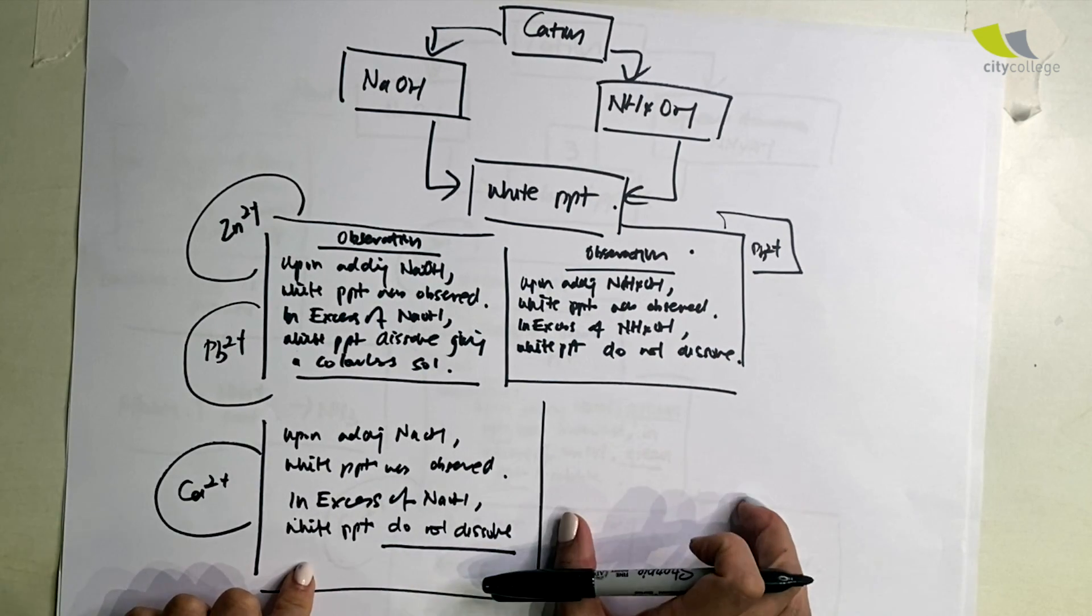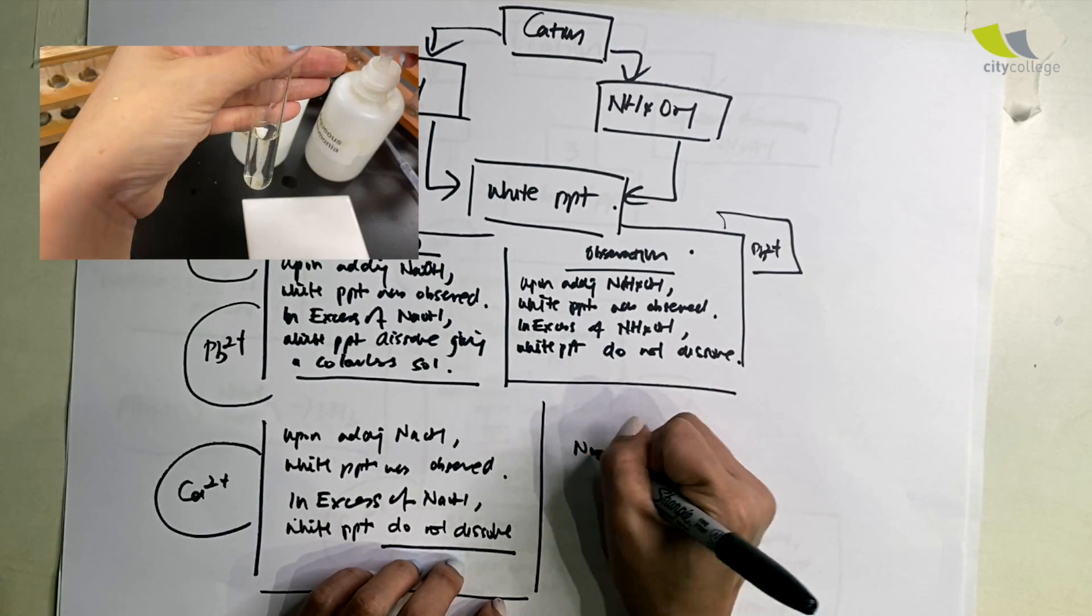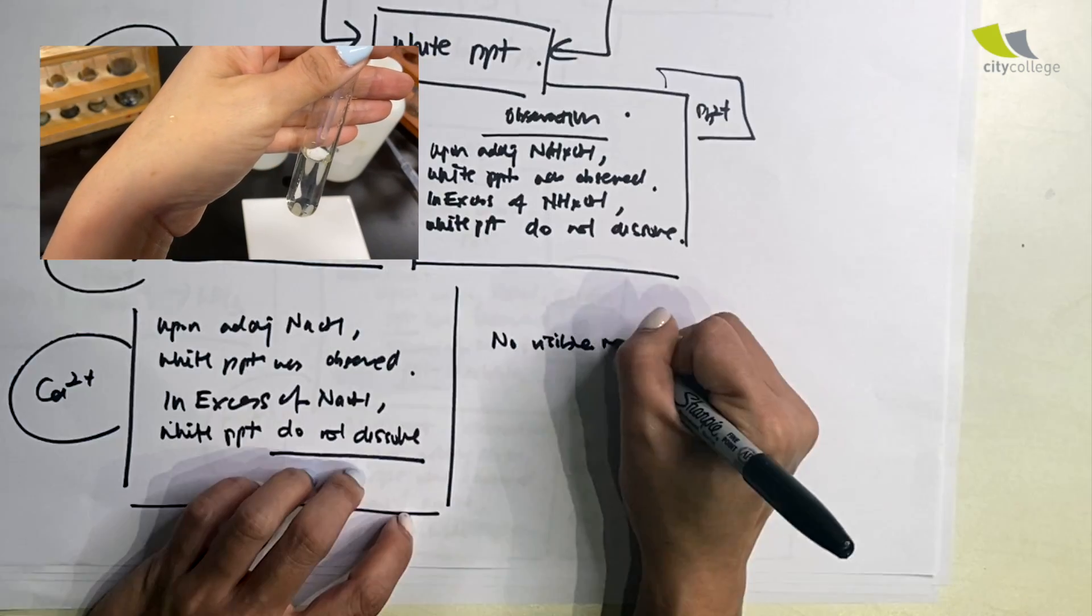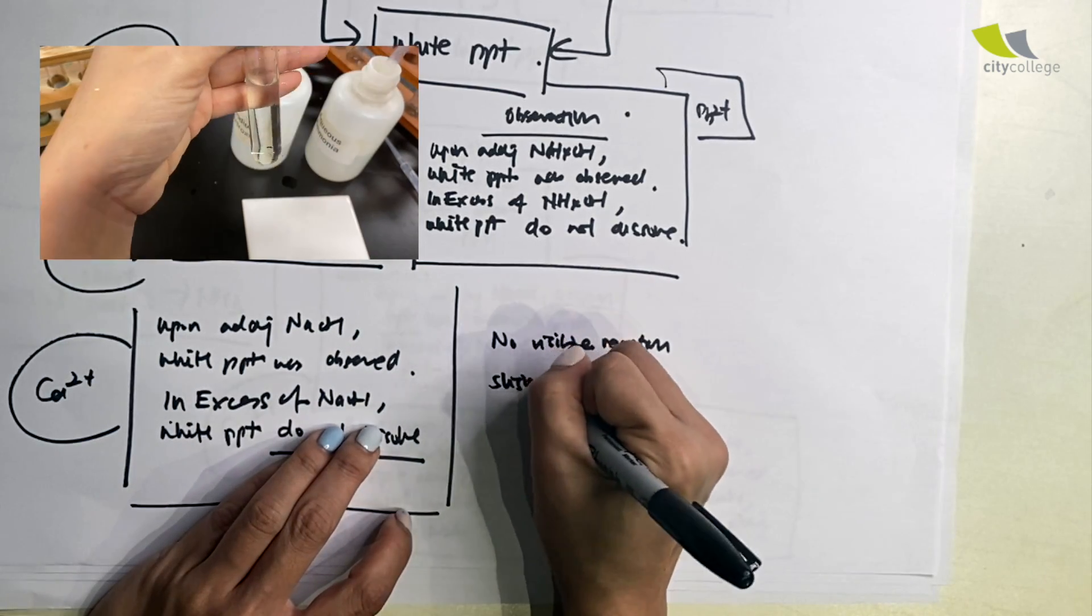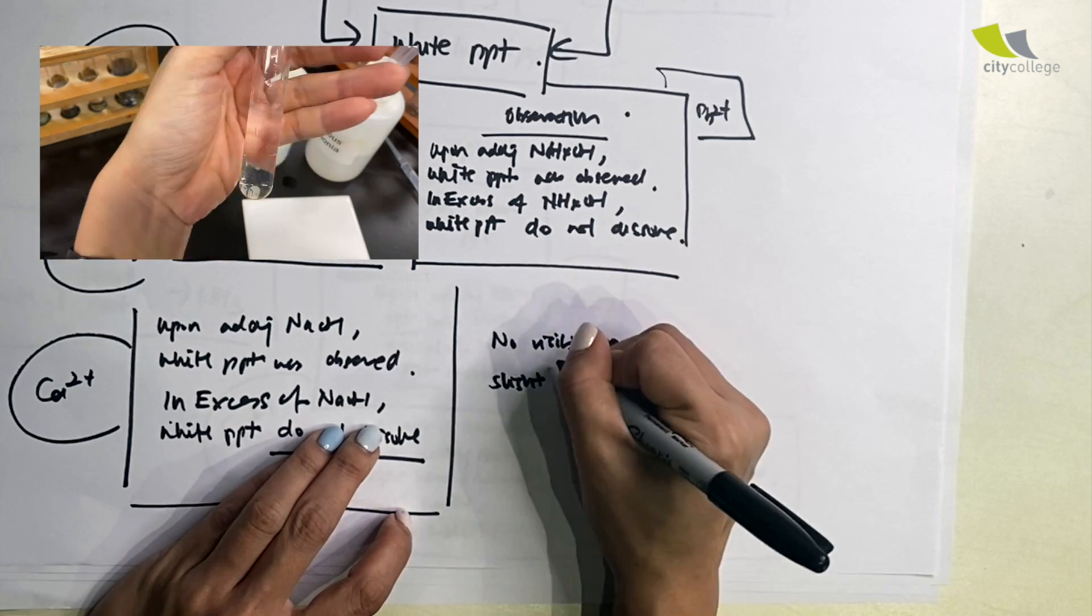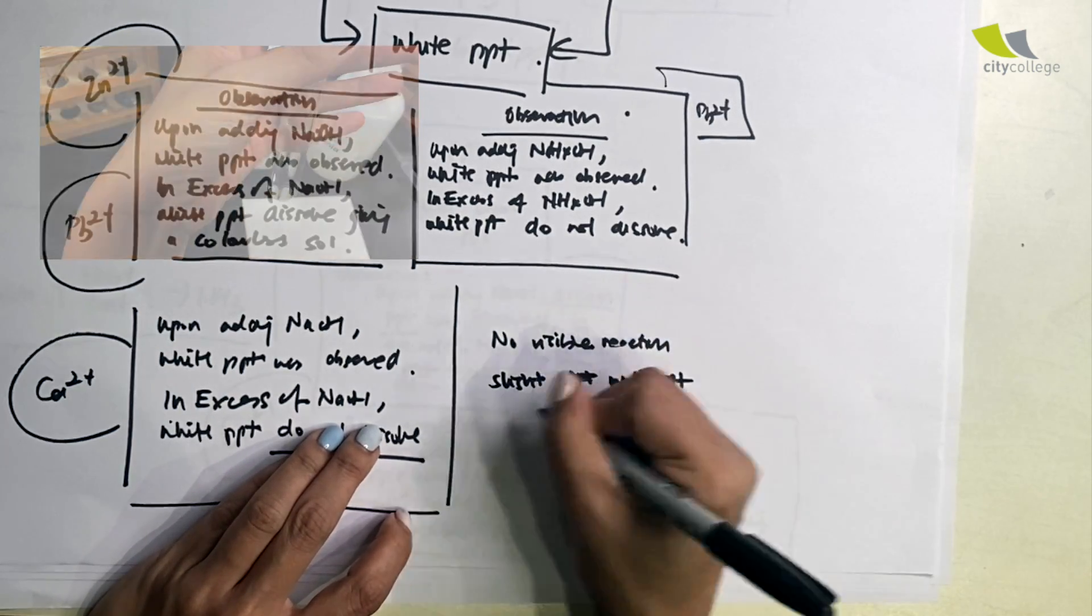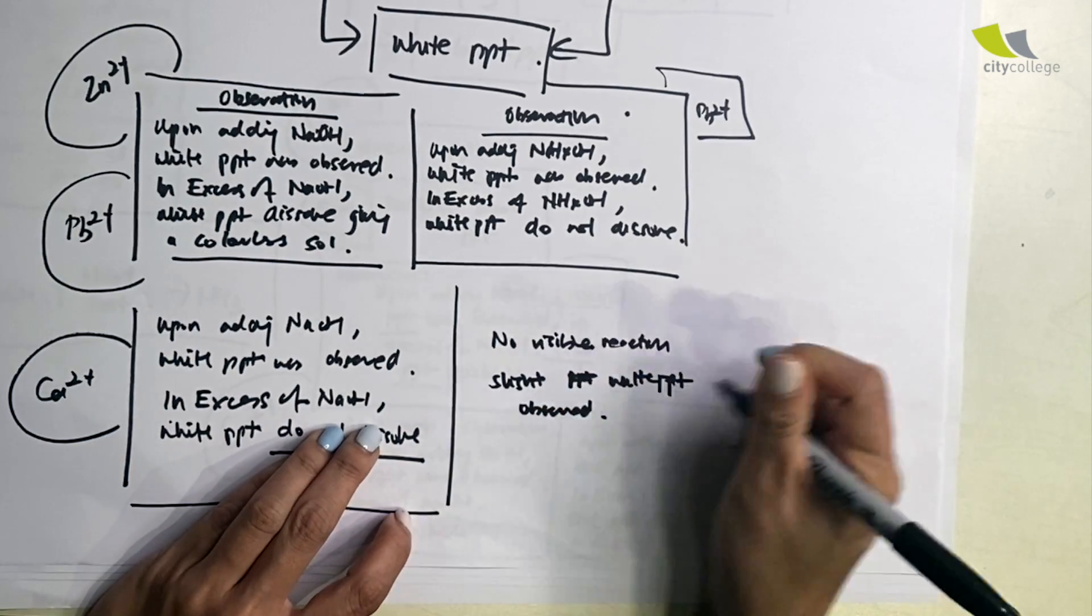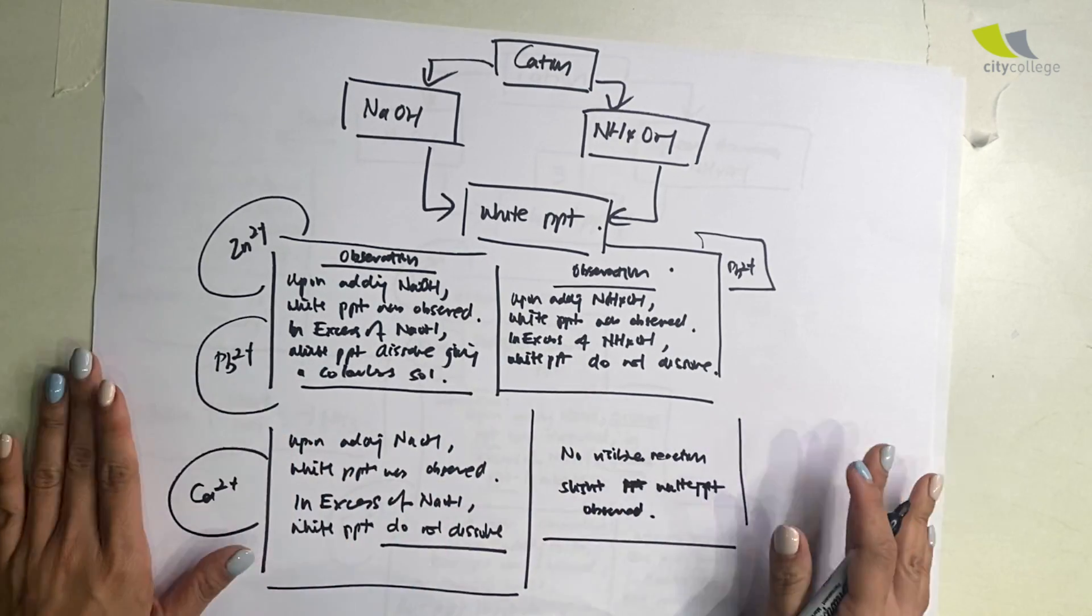I'm glad to ask. For NH4OH, sometimes there's no visible reaction - that could be one possibility - or slight white ppt observed, only slight. So that is why it's very distinct. All right, so let's recap again.